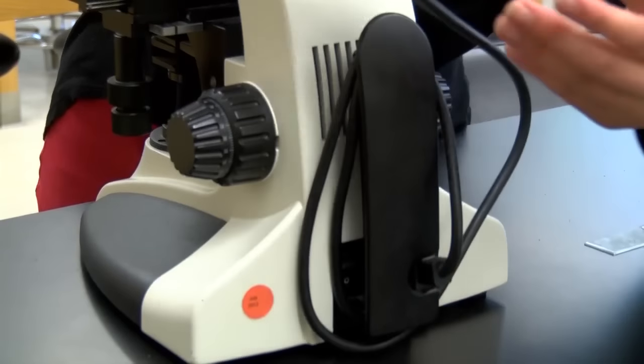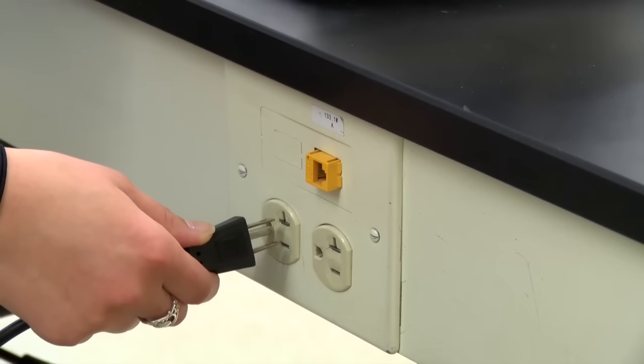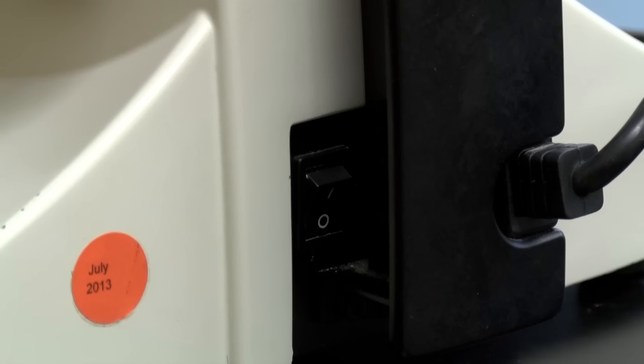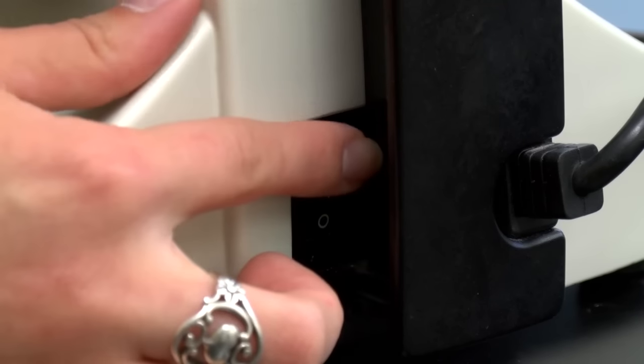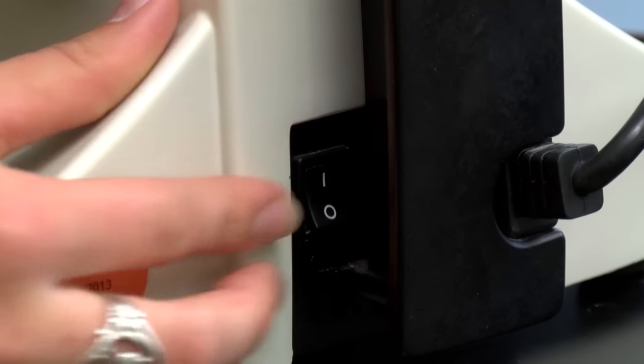Unwind the cord from the back of the microscope and plug it in. The on-off switch is on the back of the scope and may be hard to find if the power cord is still wrapped around the holders.